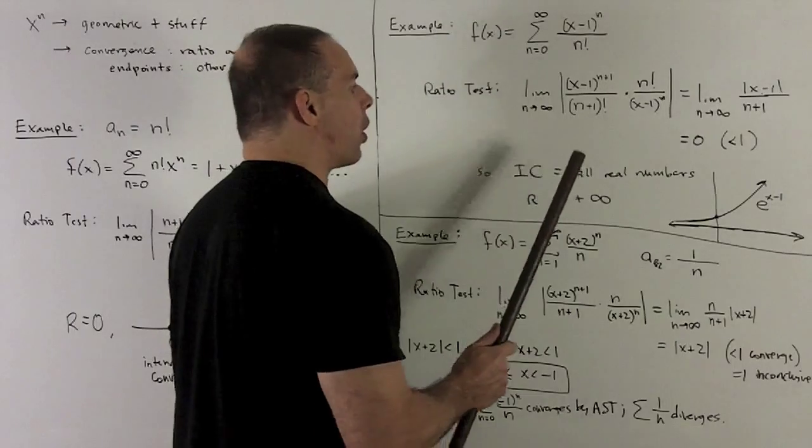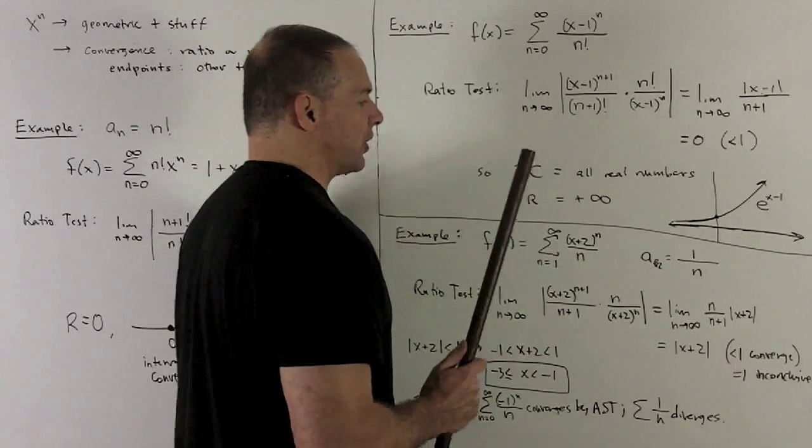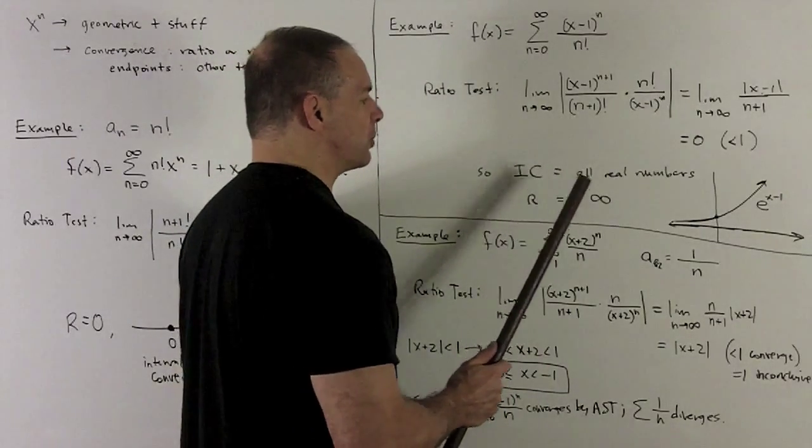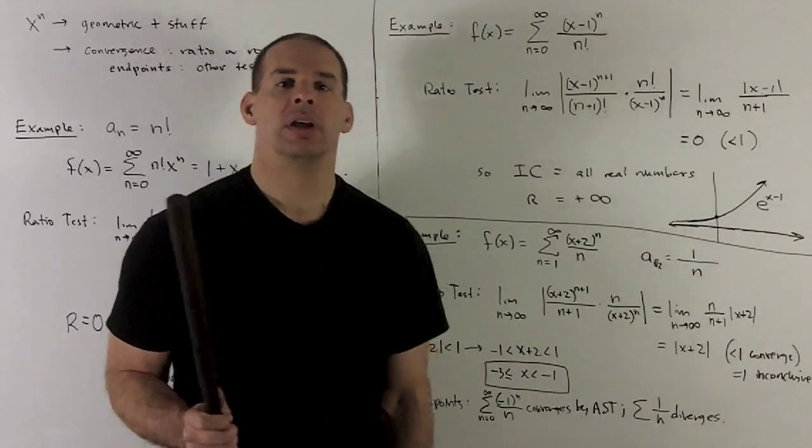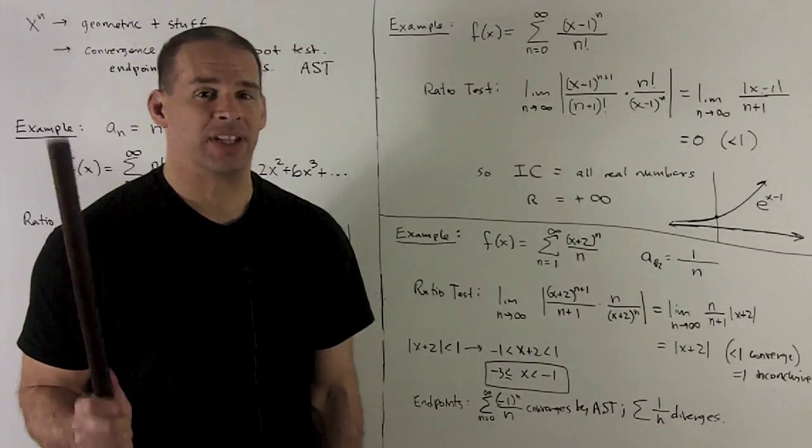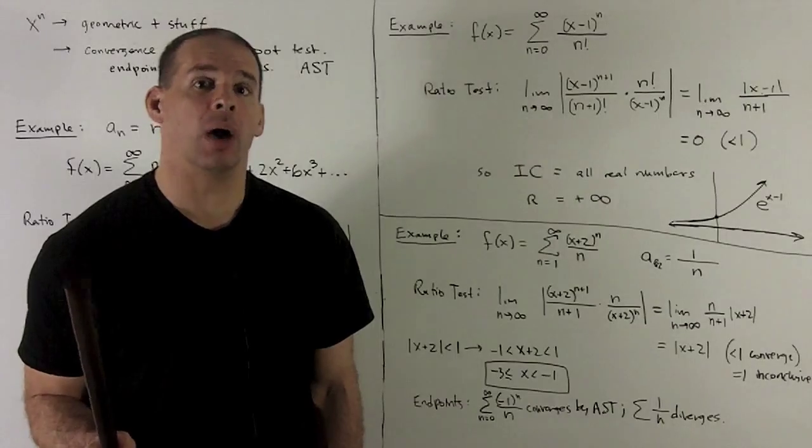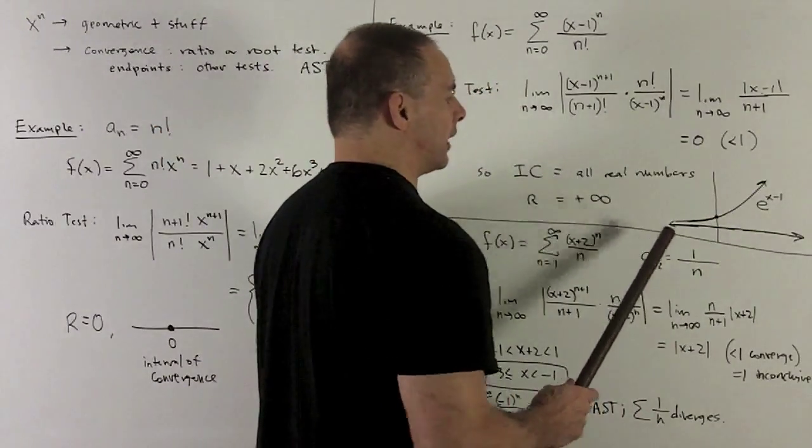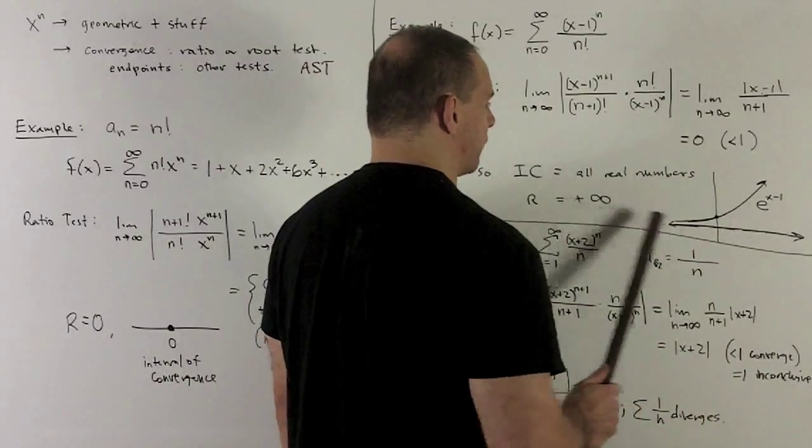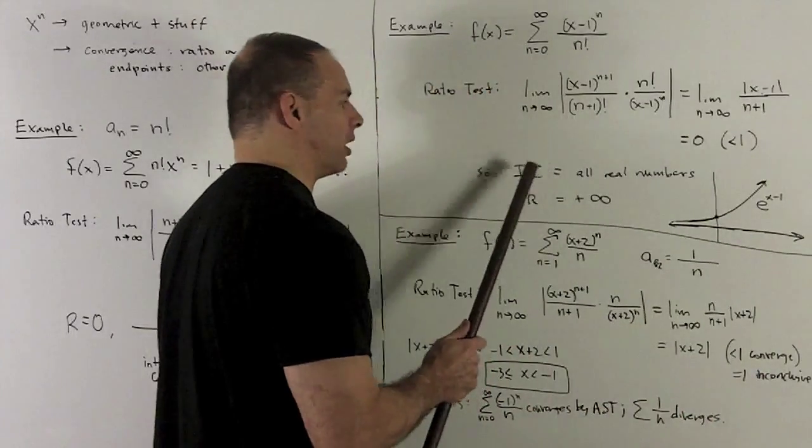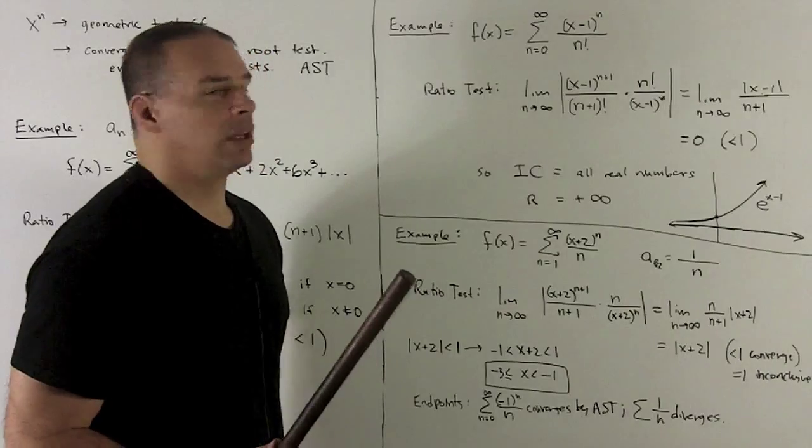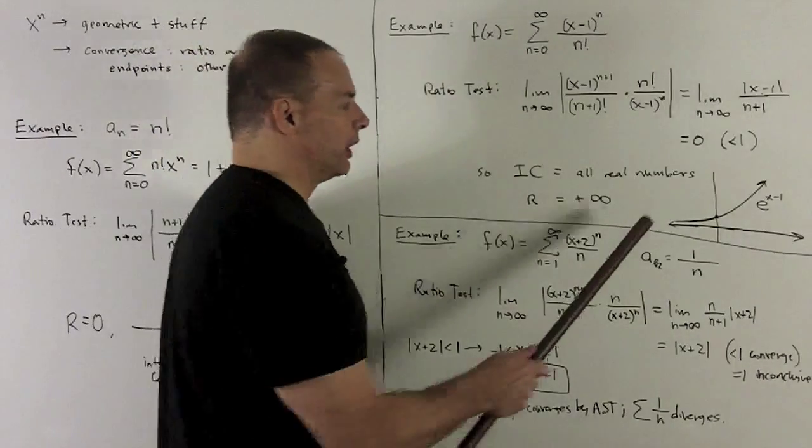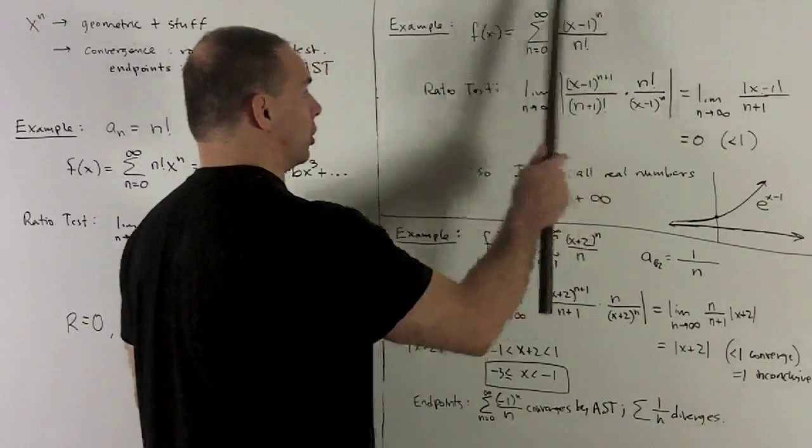And so that's going to mean the radius of convergence is plus infinity. We'll see later on that this actually matches up to a function that we know. It's going to be e to the (x-1). And then you'll note that this thing's defined everywhere. So that's going to agree with our interval of convergence. And if at a minimum, we get a picture of what this function looks like.